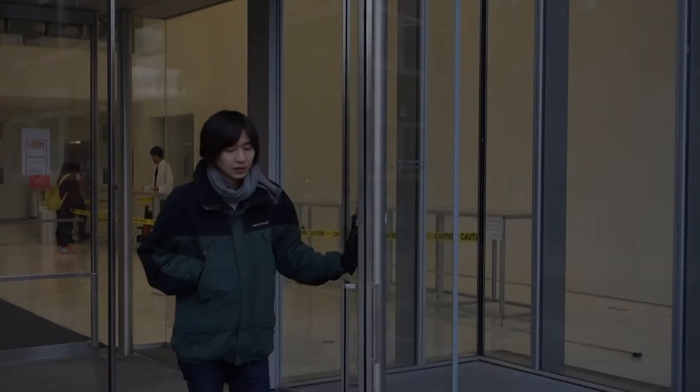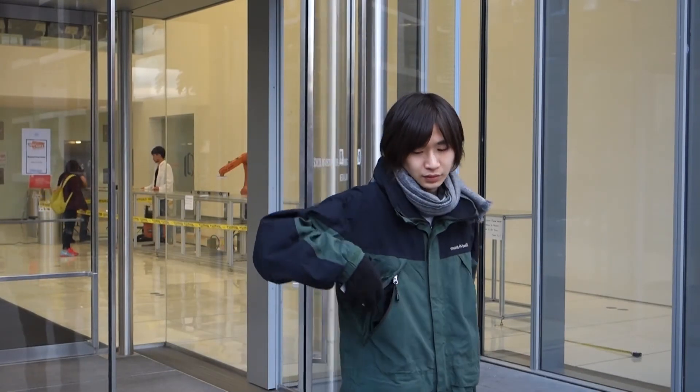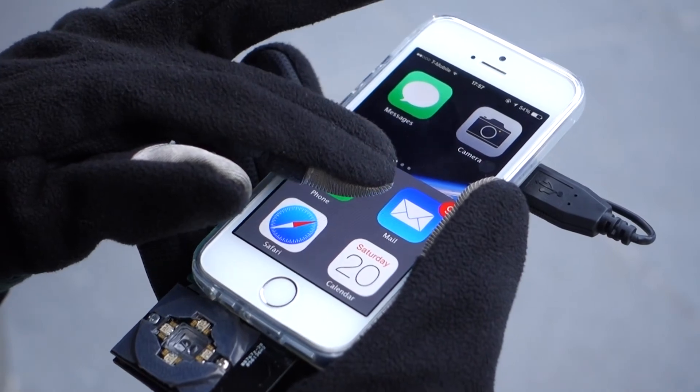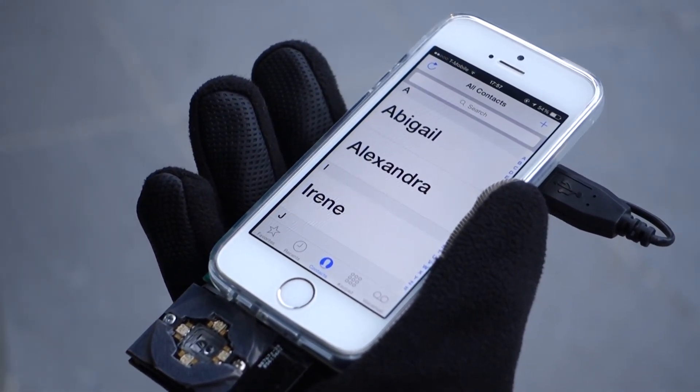However, when a user is wearing a glove, a set of large icons that are used more frequently will show up for easier navigation. All these user contexts are detected by the material sensor automatically.